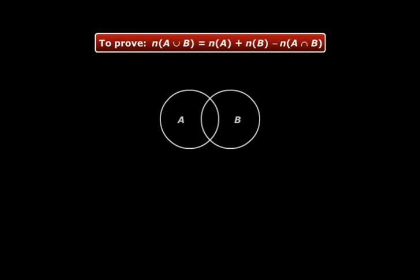So let's use Venn diagrams. There you see sets A and B. This region represents set A and this region represents set B. Now look at this region. This represents A ∩ B.